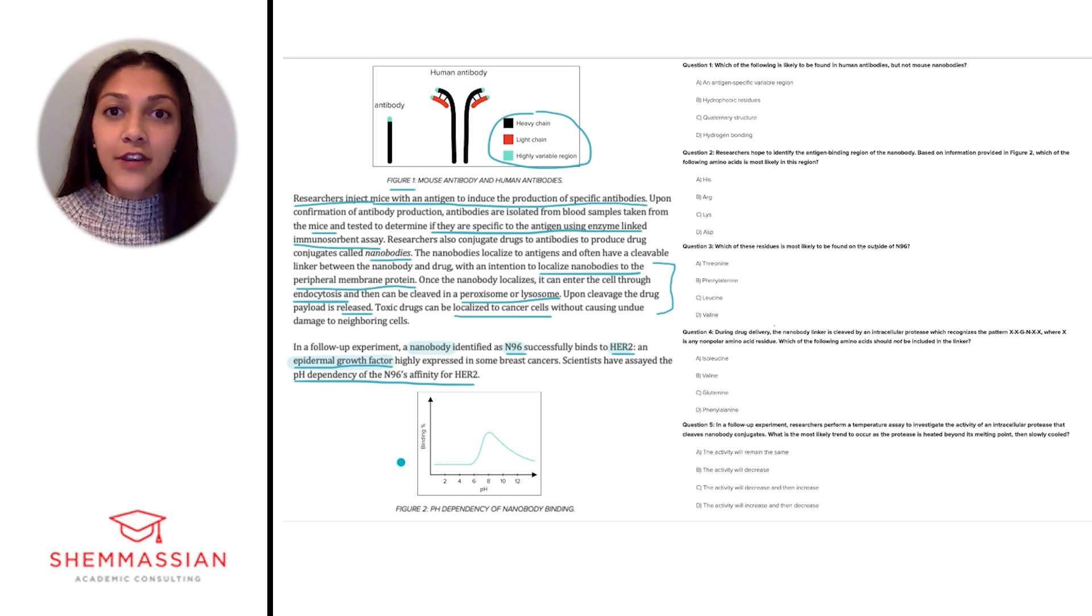In this case, the figure is pretty straightforward and shows us the pH dependency of N96's affinity for HER2. You'll notice also that the binding percentage increases around a pH of 6, reaches a maximum around a pH of 8, and then decreases as pH increases further.